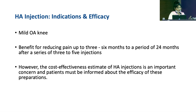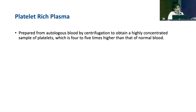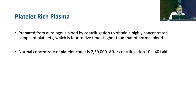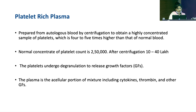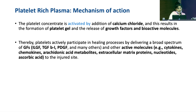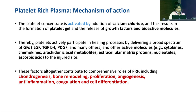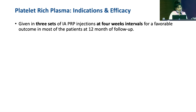Platelet-rich plasma (PRP) is made from autologous blood by centrifugation to obtain a highly concentrated sample of platelets — four to five times higher than normal blood. Normally we have 2.5 lakh platelet count; after centrifugation it gets concentrated to 10–40 lakh. With such high concentration of platelets, it is a high source for active molecules like growth factors including insulin-like growth factor, TGF-beta, and PDGF, as well as cytokines, chemokines, and arachidonic acid. It has a role in chondrogenesis, bone remodeling, proliferation, angiogenesis, anti-inflammation, coagulation, and cell differentiation.